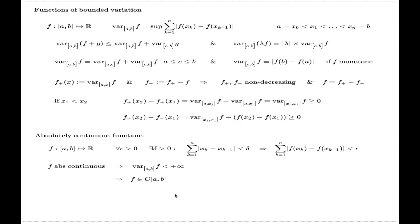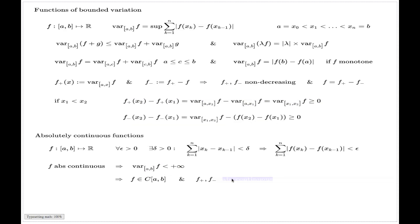A harder but important conclusion is that if a function is absolutely continuous, then it is a function of bounded variation, so one can construct its F+ and F− components. It is a more difficult observation that these two components will also be absolutely continuous. This is an important observation on our pathway towards the fundamental theorem of calculus.